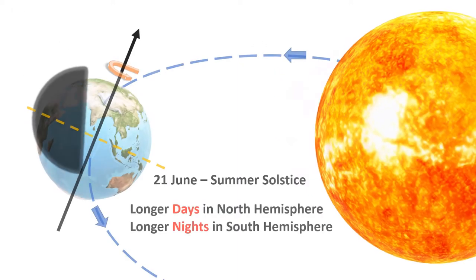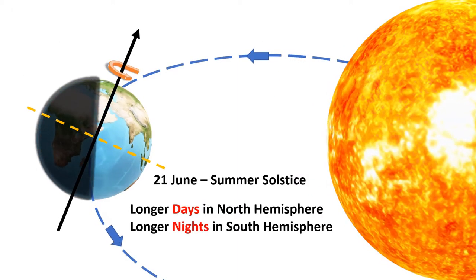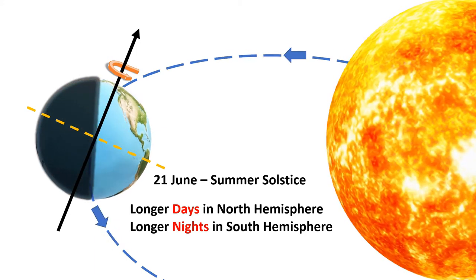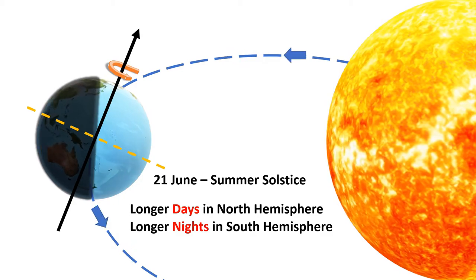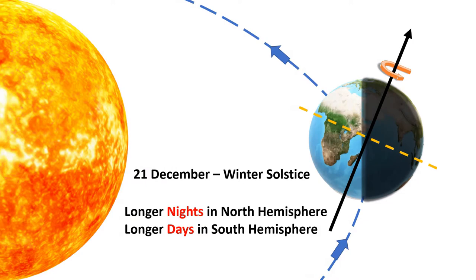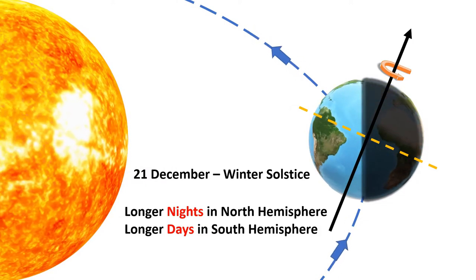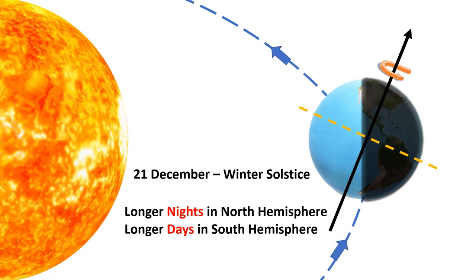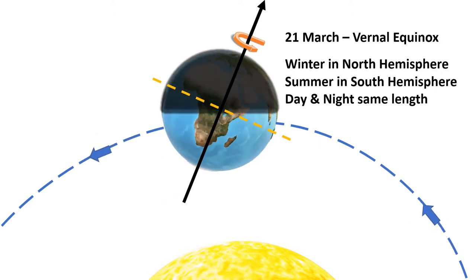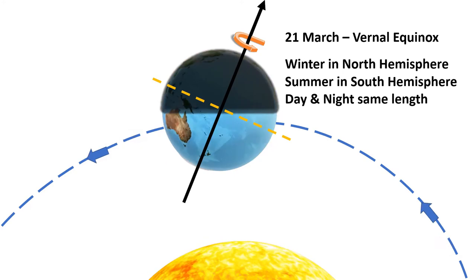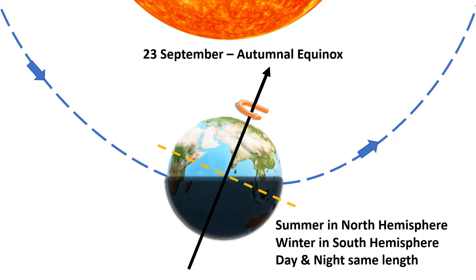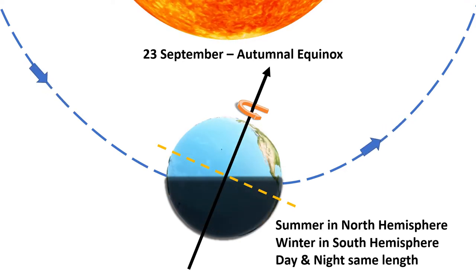As we move around the sun, we experience longest day in Northern Hemisphere on 21st of June. We call this Summer Solstice. Winter Solstice comes on 21st of December with longest night on the Northern Hemisphere. Around 21st of March and 23rd of September, the length of the day and night will be around the same. We call this Vernal Equinox and Autumnal Equinox.